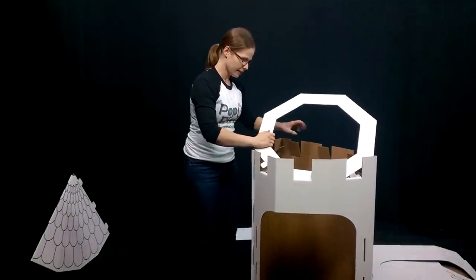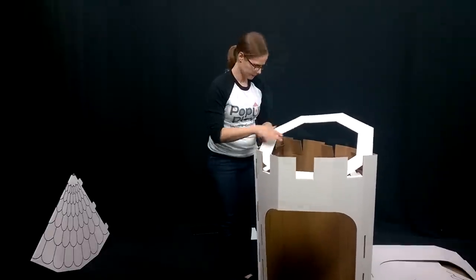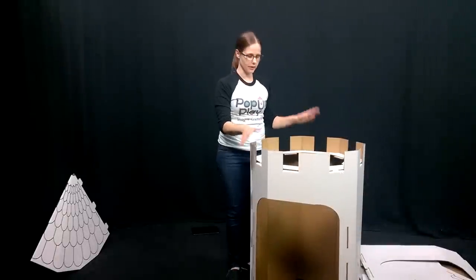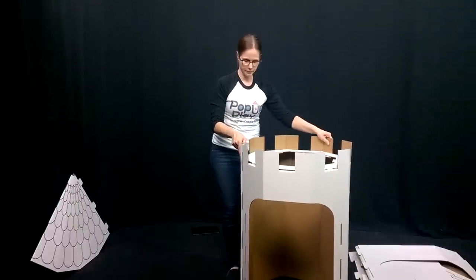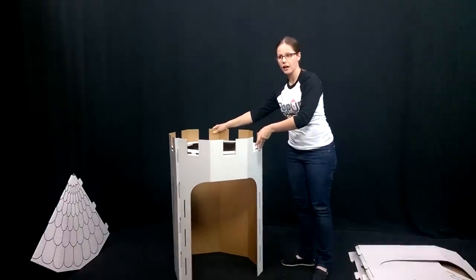I like to install the ring in kind of a circular motion. Now that the ring is in place, the tower stands on its own. I'm going to set it right where the tower is on my castle.